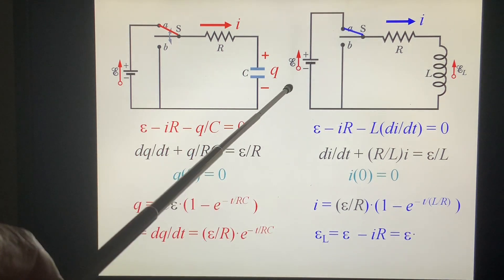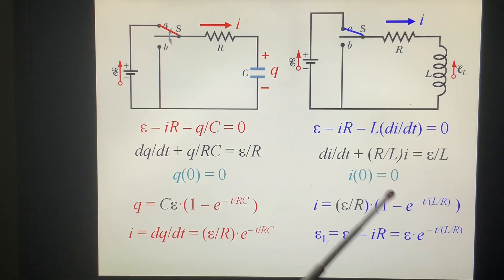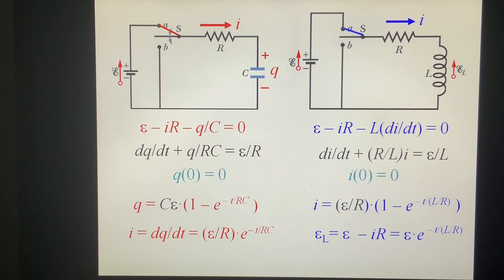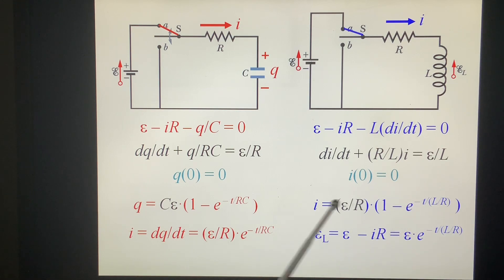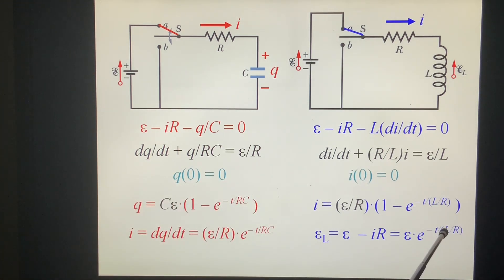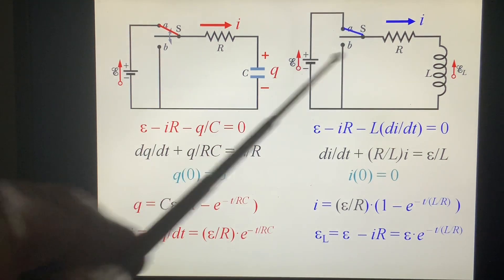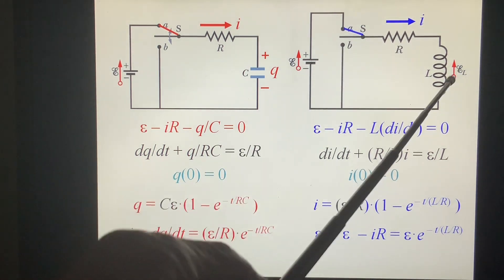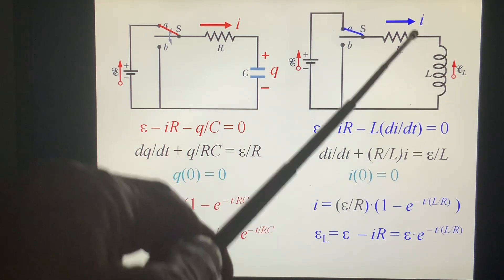From this we get epsilon times e to the minus t·R/L. When T equals 0, E0 is 1, so I is 0 at the beginning — it does not jump to a huge value. Instead, I keeps at 0 and gradually increases until T goes to infinity. When T approaches infinity, I equals epsilon/R. The self-induced EMF is very large at the start, opposing the change, and as I increases, it decreases to 0.